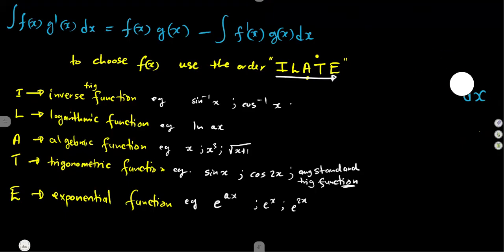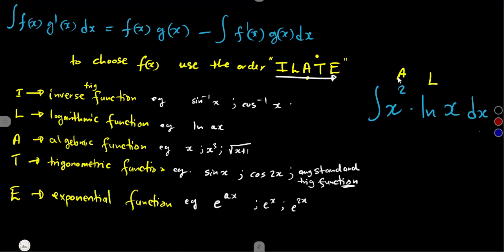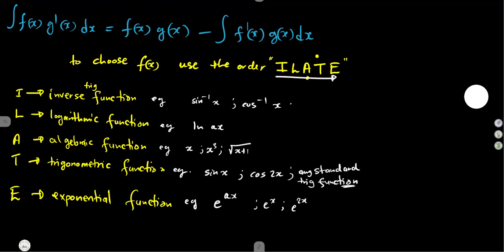Another example: the integral of x²·ln(x) dx, or maybe ln(2x). Which part do I choose as my f(x)? I have x², which is algebraic, and ln(x), which is logarithmic. According to ILATE, logarithmic comes before algebraic. So the logarithmic wins. We let f(x) = ln(x), and the remaining part x² will be integrated.